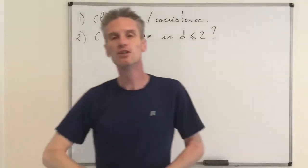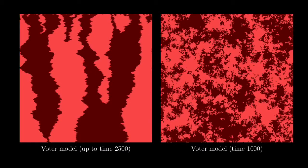Looking at a picture shown previously, we see a simulation of the one-dimensional voter model on the left and a snapshot of the two-dimensional voter model on the right. A first challenge is: what do we mean by cluster size? This quantity is not clearly defined. In one dimension it is clear — you draw a horizontal line across space and along this line you see a succession of intervals of type 0 and intervals of type 1. Because the process is translation invariant, those interval lengths are identically distributed.